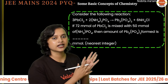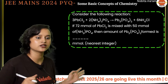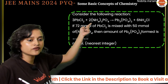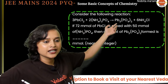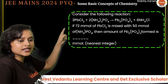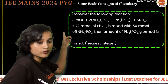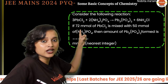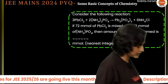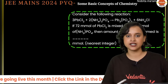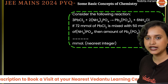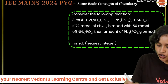The first question says: consider the following reaction — 3 PbCl₂ + 2 (NH₄)₃PO₄ → Pb₃(PO₄)₂ + 6 NH₄Cl. If 72 millimoles of PbCl₂ is mixed with 50 millimoles of (NH₄)₃PO₄, what is the amount of lead phosphate formed? This is an integer type question, so you have to solve and provide the answer directly.